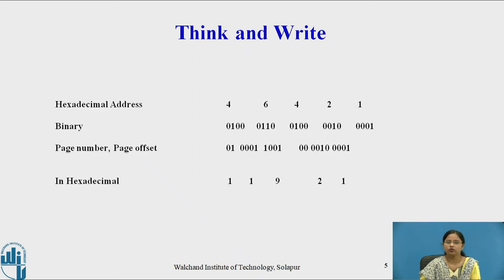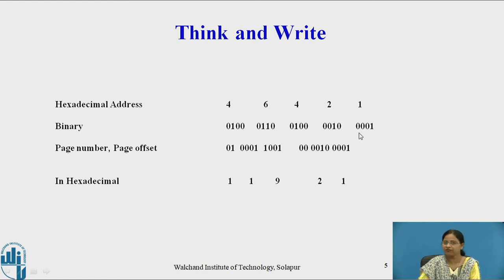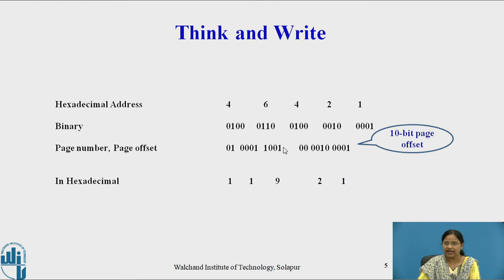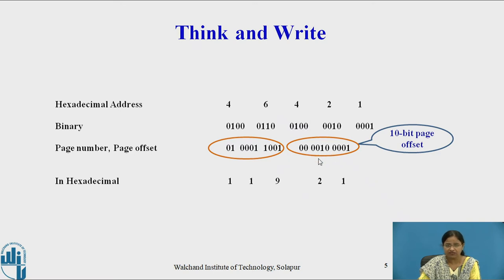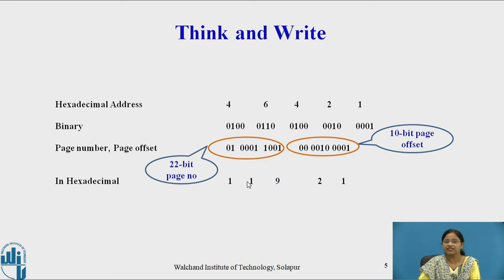As already stated, whatever hexadecimal number is given, first convert it to binary. The binary representations of 4, 6, 4, 2, and 1 are given. We convert this binary number into a 10-bit page offset and the remaining bits become the 22-bit page number. The 10-bit page offset and the 22-bit page number are identified. After converting to hexadecimal, we get 21 as the page offset and 119 as the page number. So hexadecimal address 46421 is converted to page number 119 with page offset 21 — it is located in page number 119 at byte offset 21.